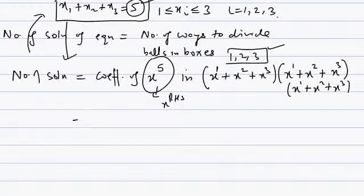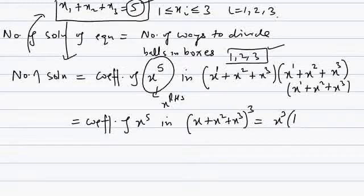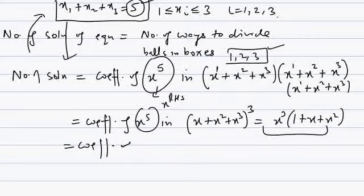Applying binomial theorem, we need the coefficient of x⁵ in (x + x² + x³)³. We take x common from each bracket, giving x³ · (1 + x + x²)³. Finding the coefficient of x⁵ in this is the same as finding the coefficient of x² in (1 + x + x²)³.